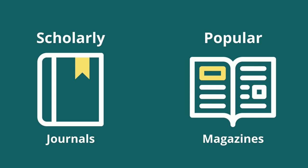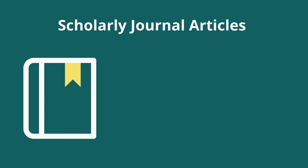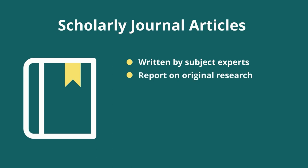Let's take a look at some defining features of scholarly journal articles. When you're trying to decide whether to use any resource in your academic paper, the first thing you should always find out is: who wrote it? Journal articles are written by scholars or experts in their field of research. They'll cover original research or topics in great detail and will often make complex arguments.